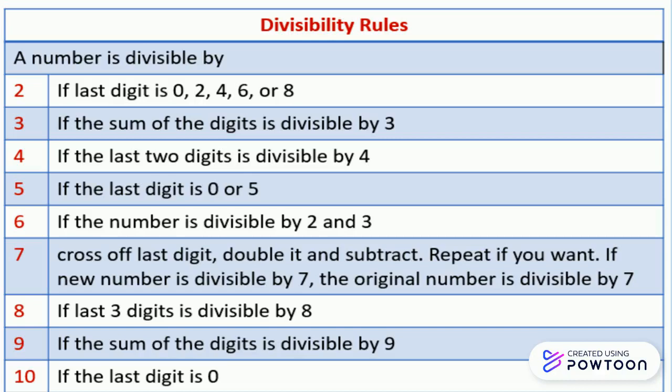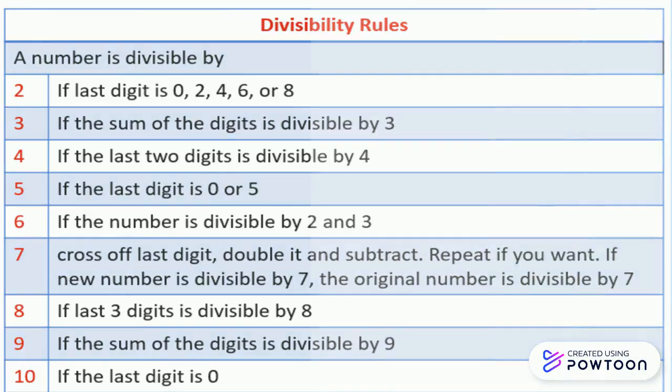Divisible by 8 if the last three digits are divisible by 8. Divisible by 9 if the sum of the digits is divisible by 9. Divisible by 10 if the last digit is 0.